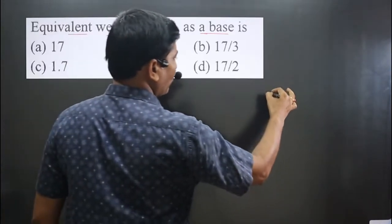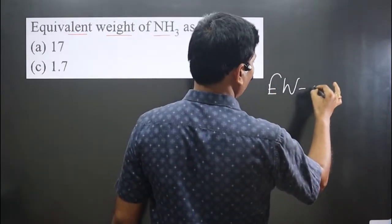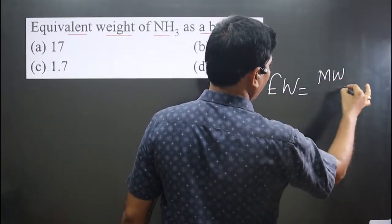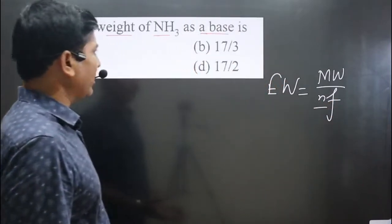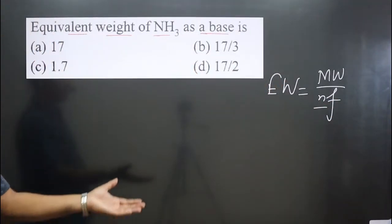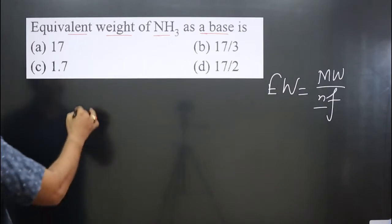The formula for equivalent weight is: Equivalent weight = Molecular weight / n factor. If we calculate the n factor value, we can answer this question because we can calculate the molecular weight for ammonia.